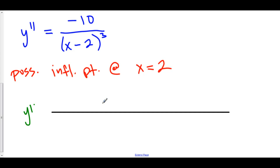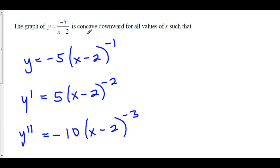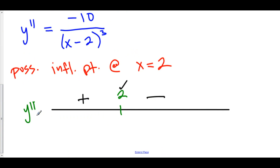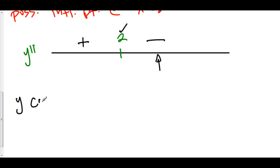To determine whether x = 2 is an inflection point, we check the sign of y double prime on each side. Plugging in 0 to the left: 0 - 2 = -2, cubed is -8, and -10 divided by -8 is positive. Plugging in 5 to the right: 5 - 2 = 3, cubed is positive, and -10 divided by a positive is negative. So y double prime changes from positive to negative at x = 2 — it is an inflection point. Therefore y is concave down on the interval (2, ∞), not including 2 since y double prime doesn't exist there.